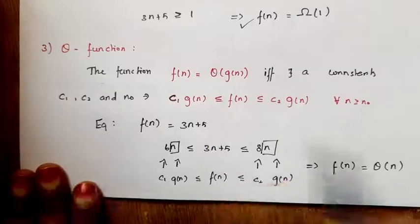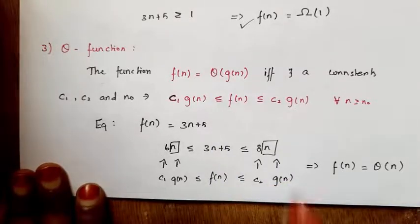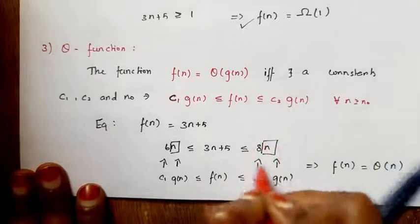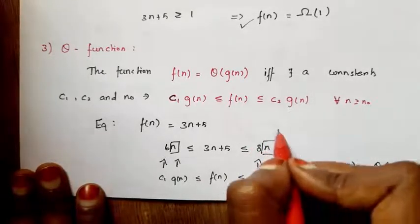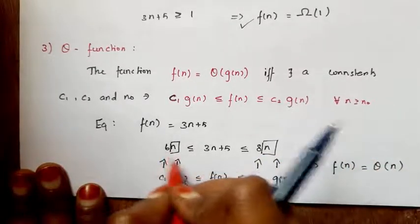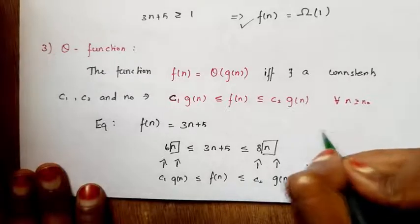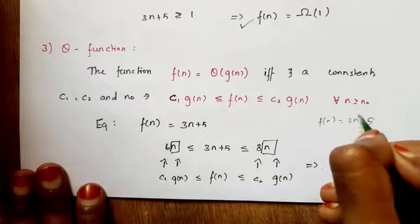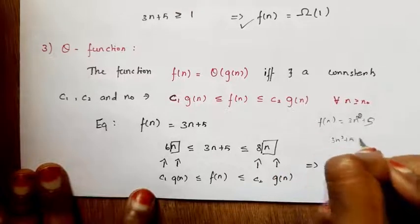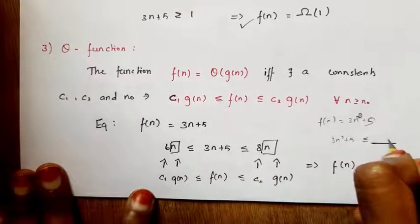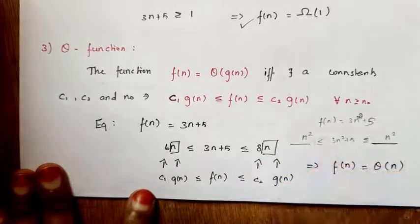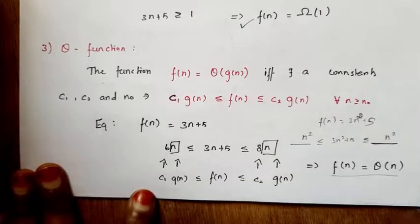One important condition for Theta: here the function 3n+5 is in the n-class, so the bounding function must also belong to the n-class. We cannot use n-squared, n-cubed, or log n class. For example, if f(n) = 3n² plus 5, then the function belongs to the n-squared class, so here also the bounding function must belong to the n-squared class. Then we write f(n) = Θ(n²).